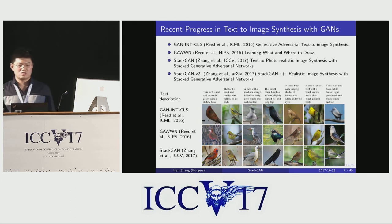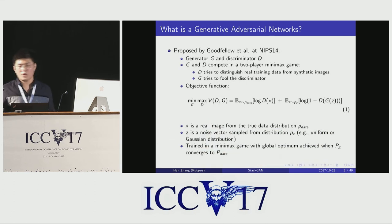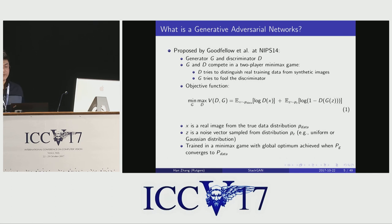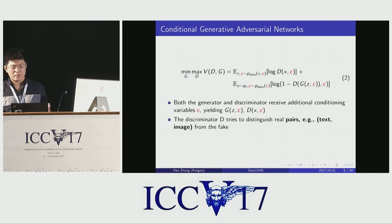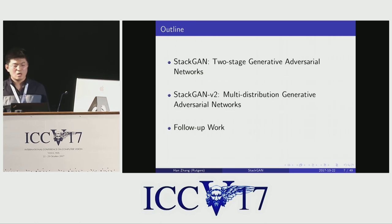To address this challenge, we first propose a two-stage StackGAN generative adversarial network for text-to-image synthesis. Later on, we proposed a multi-stage advanced generative adversarial network for both conditional and unconditional image generation. Obviously, our StackGAN is based on the GAN framework. For conditional image generation, the generator and the discriminator both need to receive additional condition variables. In the rest of this talk, I'll talk about the details for StackGAN and StackGAN2.